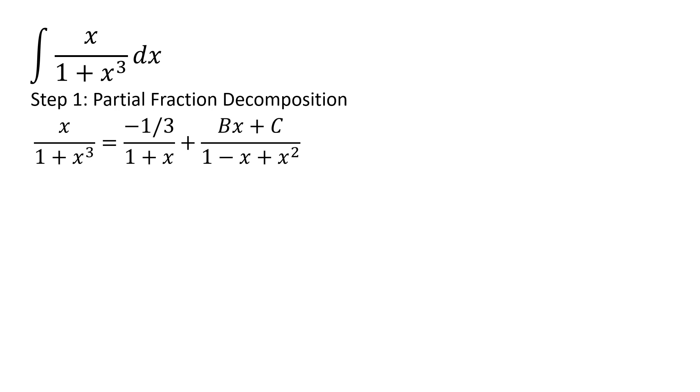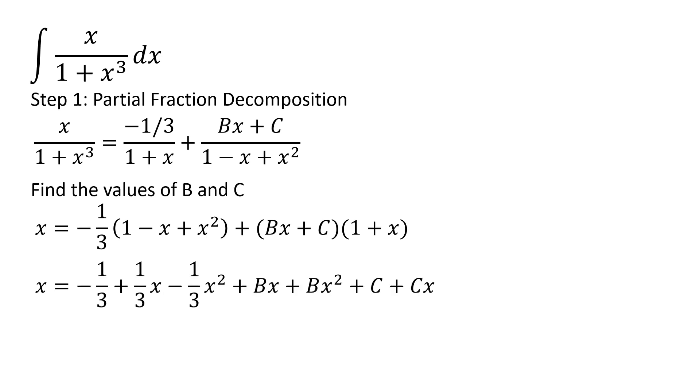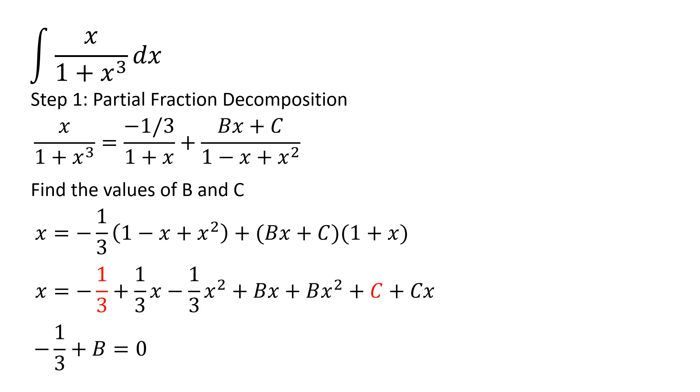The next steps are to find B and C. I will write x equals negative 1 third times 1 minus x plus x squared plus Bx plus C times 1 plus x. When I multiply this out, I can now gather the like terms. If I gather all the like terms in x squared, I will find that negative 1 third plus B equals 0. Likewise, when I gather all the constant terms, I find that negative 1 third plus C is equal to 0. This gives me that B is equal to C is equal to 1 third.